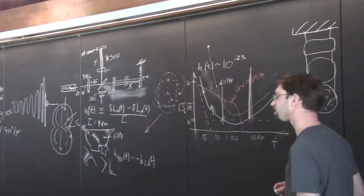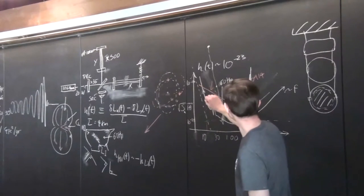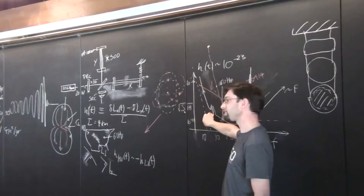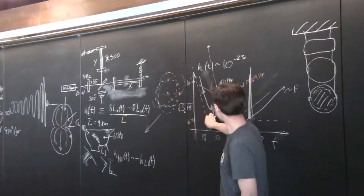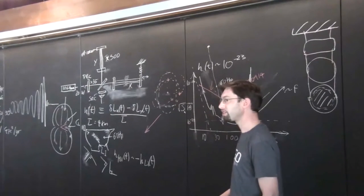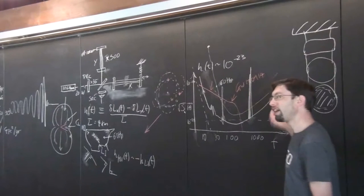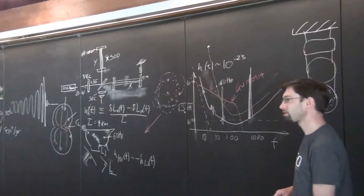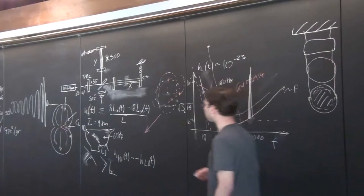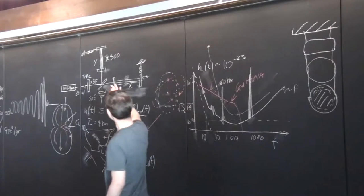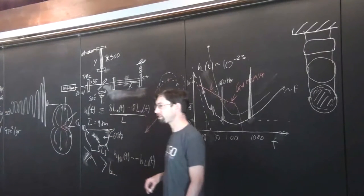In order to improve the sensitivity going forward, to get below this noise curve, you have to deal with these technical noise sources which are keeping this part of the noise above the seismic noise. But you also have to be able to increase the laser power. When you increase the laser power there's basically all sorts of instabilities that creep in and not just parametric instabilities.